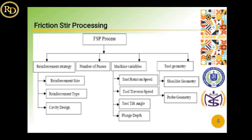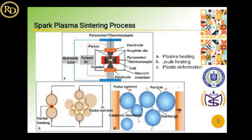Then comes friction stir processing. It depends on various factors: reinforcement strategy, machine variables, tool geometry, and number of passes. It also depends on reinforcement sizes, types, rotation speed, transverse speed, and shoulder geometry.